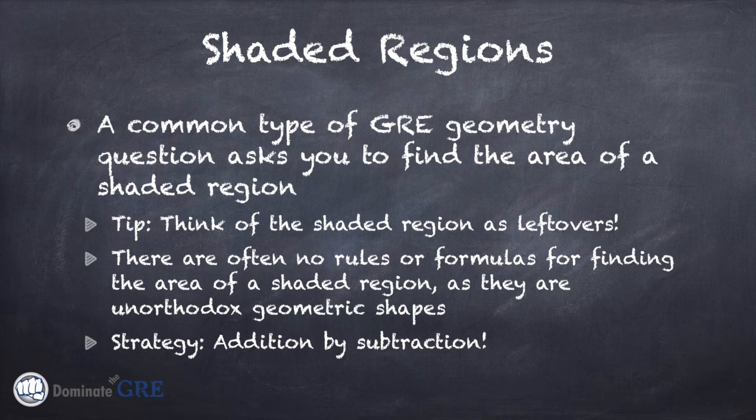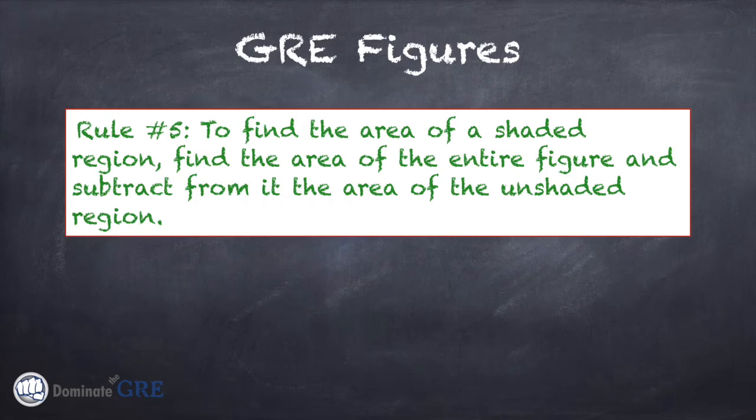And so the strategy is addition by subtraction. Rule number five: to find the area of a shaded region, find the area of the entire figure, kind of the big figure, and subtract from it the area of the unshaded region. So you start by finding the big area, and you subtract out the unshaded stuff, and what is left over is the shaded region.